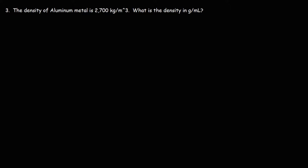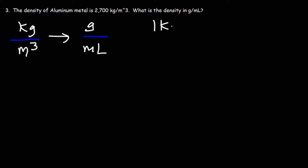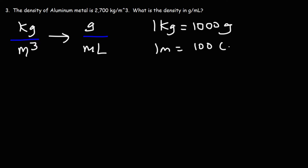The density of aluminum metal is 2,700 kilograms per cubic meter. What is the density in grams per milliliter? We need to convert mass from kilograms to grams — one kilogram is 1,000 grams. Then we need to convert volume from cubic meters to milliliters. We can convert cubic meters to cubic centimeters, noting that one meter is 100 centimeters, and then convert cubic centimeters to milliliters, since one milliliter equals one cubic centimeter.